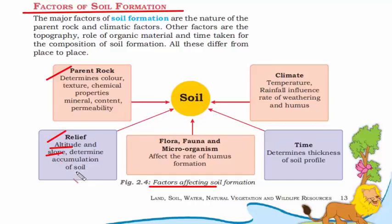If your land is elevated, most soil accumulates at the bottom, which is why in mountainous regions you find rocks on top and most soil at the base. The third factor is flora, fauna, and microorganisms. Humus — the dead, decayed matter of plants and animals — acts as a natural fertilizer. The fourth factor is time. It takes a lot of time for a large piece of rock to convert into a thick layer of soil, and this happens through weathering.